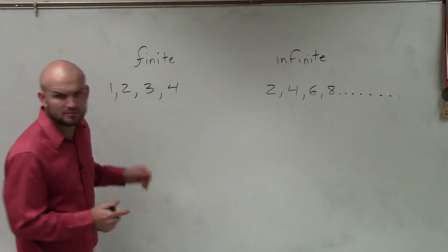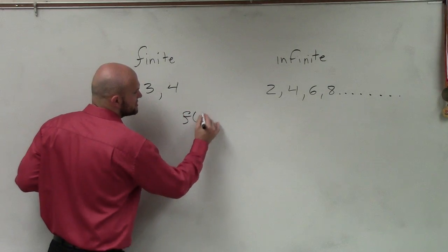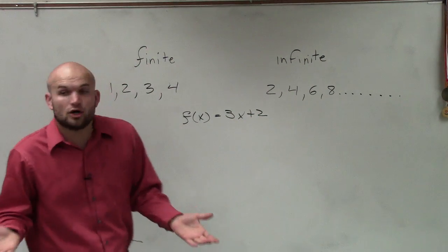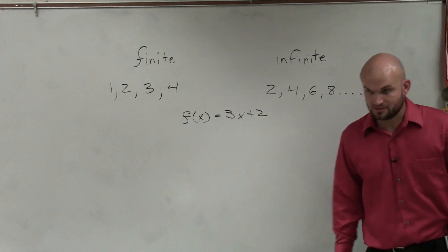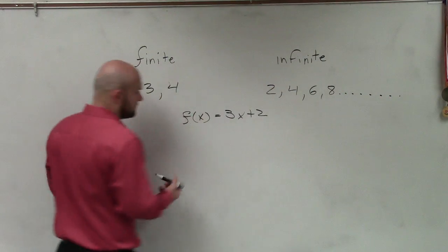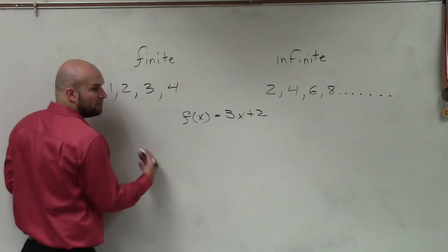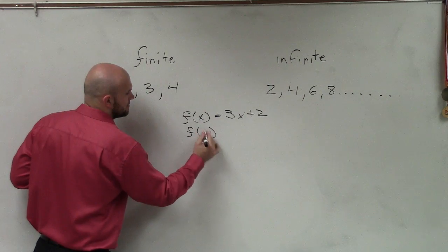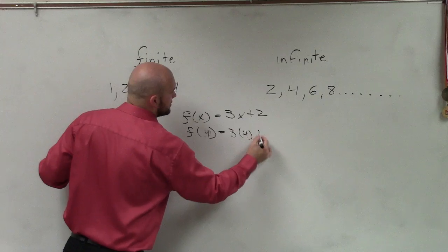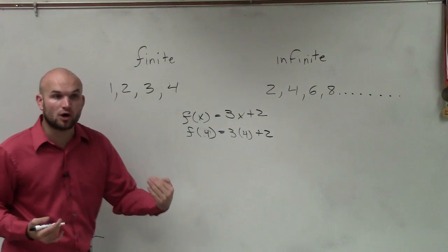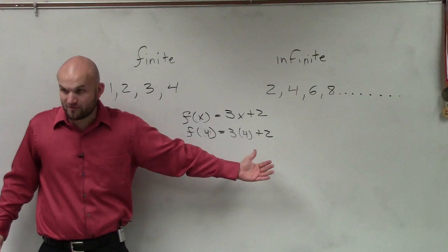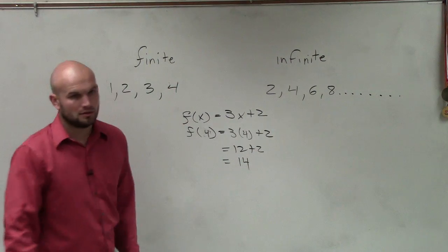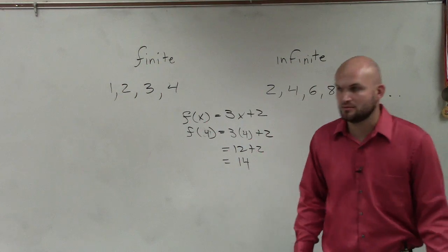If you guys remember, if I had a function — let's call this f of x equals 3x plus 2 — that was what we called the rule of the function. Here is our input, here is our output. If we wanted to find a value for that function, we would say f of 4 equals 3 times 4 plus 2. You plug the 4 in for your input value and then evaluate. Does that make sense? Everybody remember that?